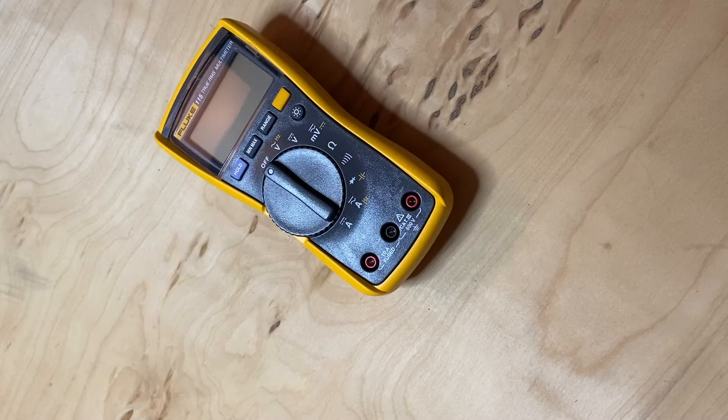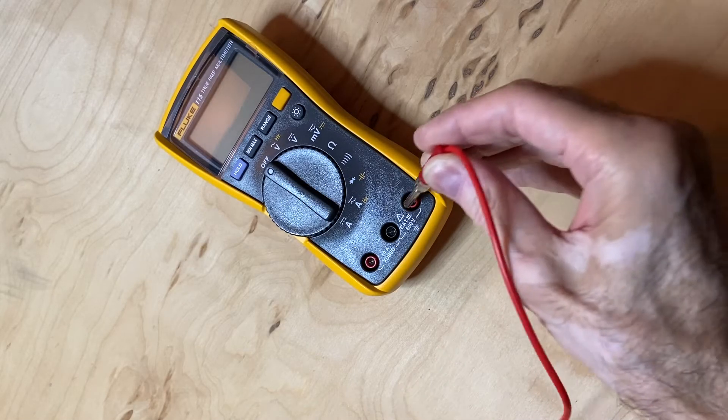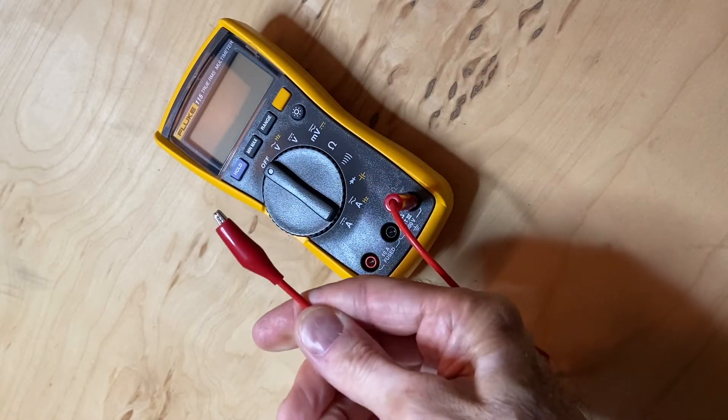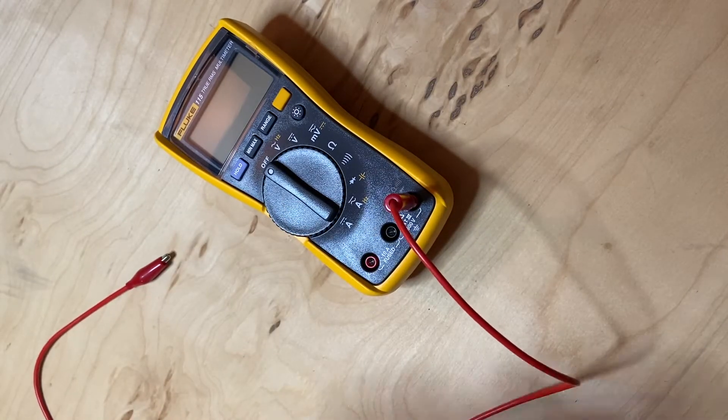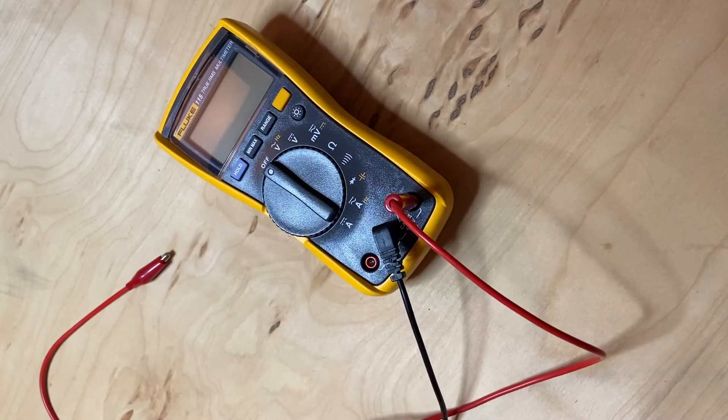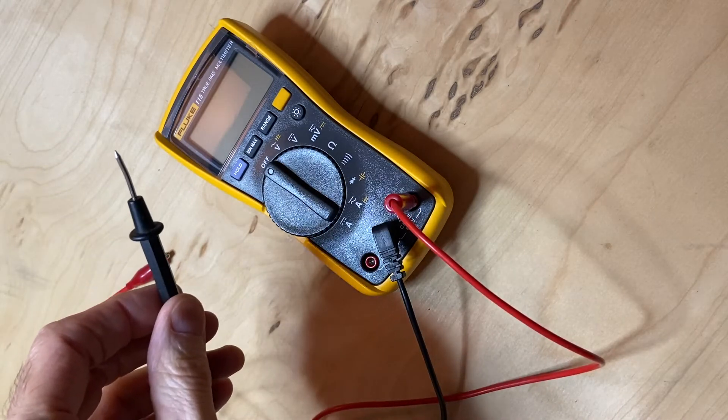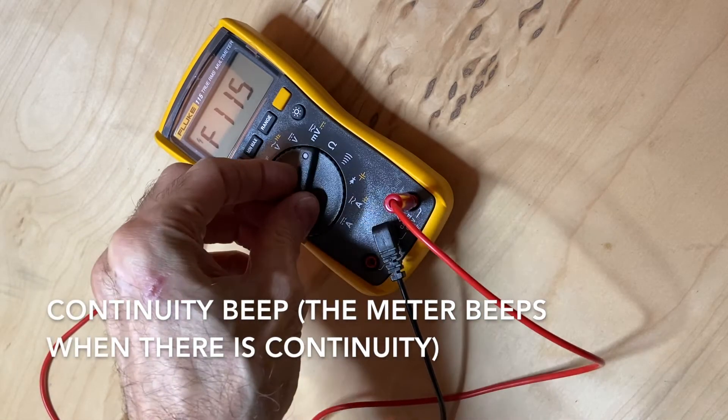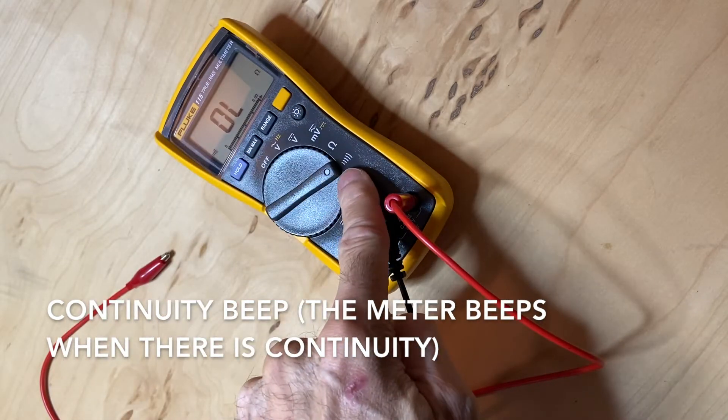We'll start by connecting one of the alligator leads to the meter and one of the probe leads to the meter. We'll turn the meter on and set it to continuity beep.